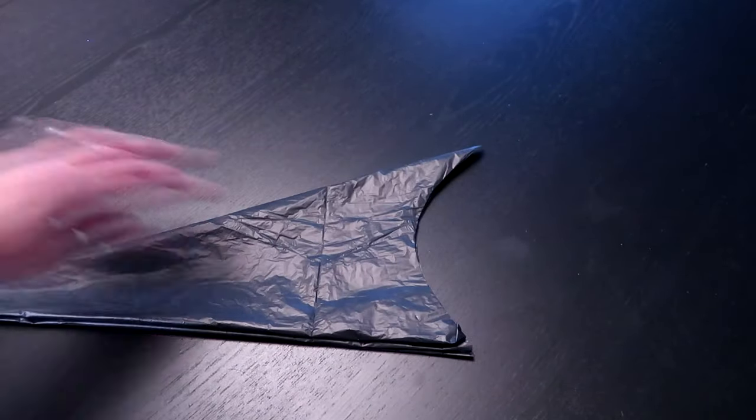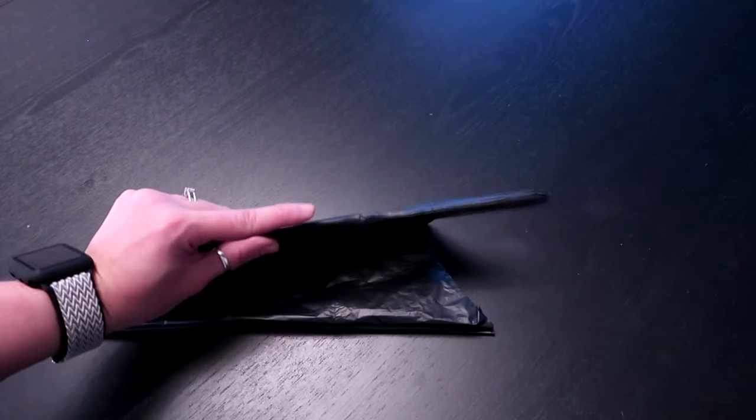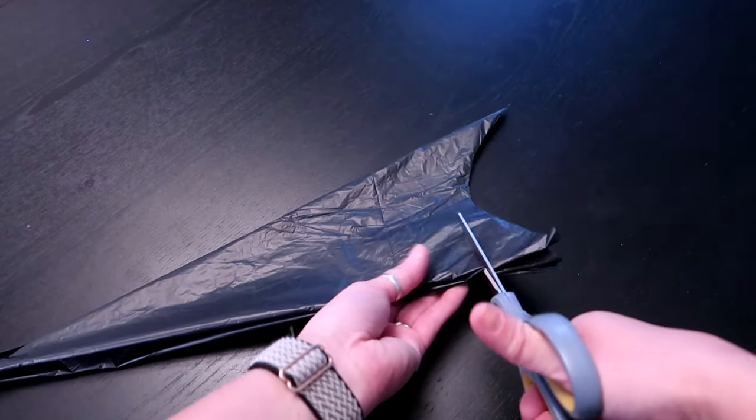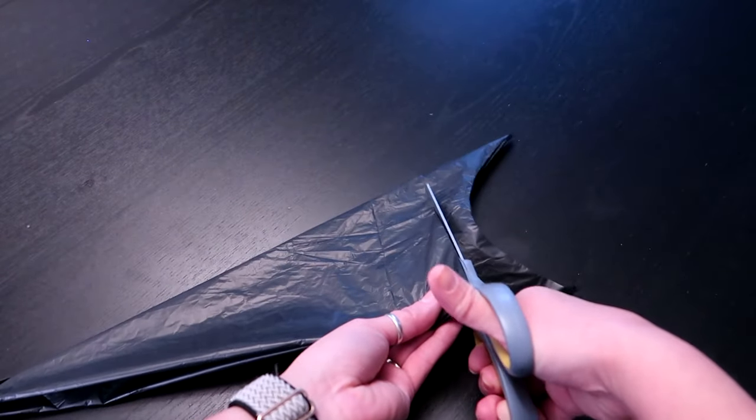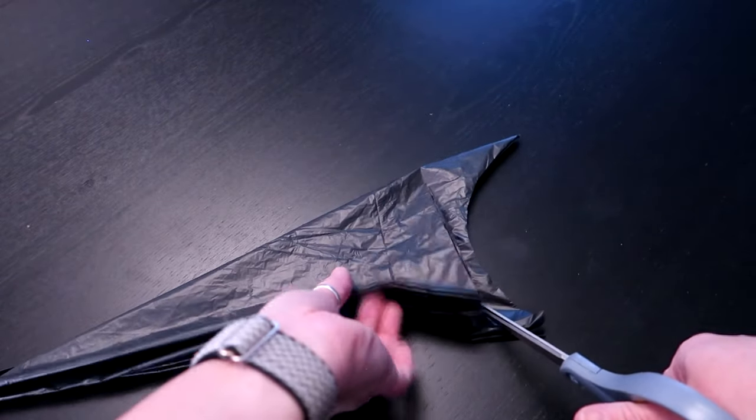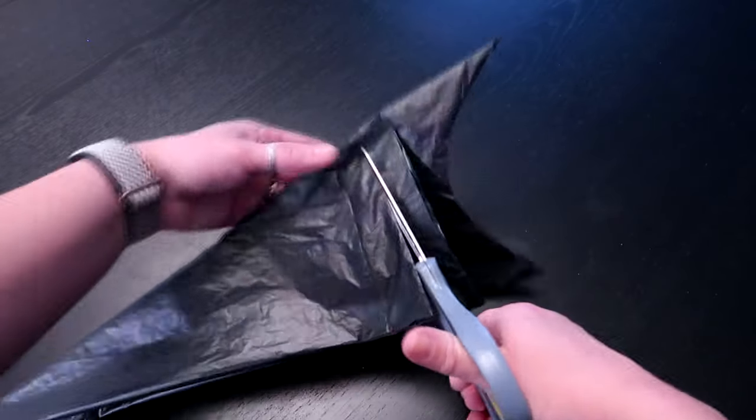Now we're gonna cut our lines going straight across. So again, do not cut on the folded side, we're gonna cut on this side. So I am gonna make a cut straight across, and because we're going on a downward angle, I am gonna stop just a little bit before the end of that first one.